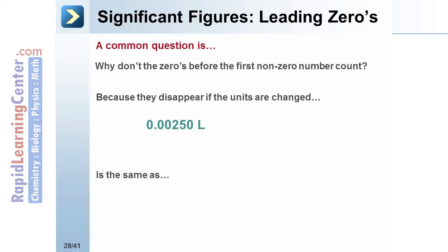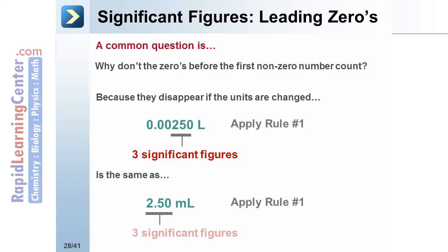For example, .00250 liters is the same as 2.50 milliliters. The first number has 3 significant digits. The second number also maintains the 3 significant figures.